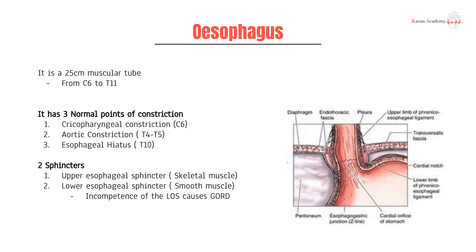You have the upper esophageal sphincter and the lower esophageal sphincter. The upper esophageal sphincter is the one you control when you swallow, and that's going to be of skeletal muscle. The lower esophageal sphincter is present as it passes through the diaphragm, and that prevents the reflux of gastric contents up into the esophagus when the stomach contracts.